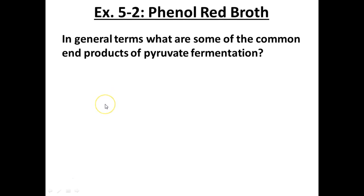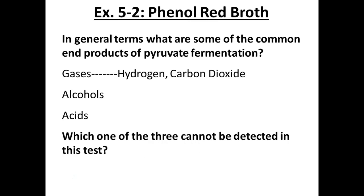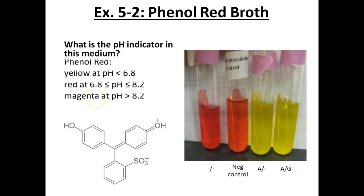The common end products of pyruvate fermentation are acids, alcohols, and gases — gases being hydrogen and carbon dioxide, alcohols being numerous, and lots of different acids. Which can we detect with this test? We can detect gas using the Durham tube that traps it. We cannot detect alcohols. We can detect acids using the pH indicator — phenol red. When acidic, it turns yellow; when alkaline, it turns this bright pinkish-magenta color. So yellow is what we're looking for in terms of fermentation.